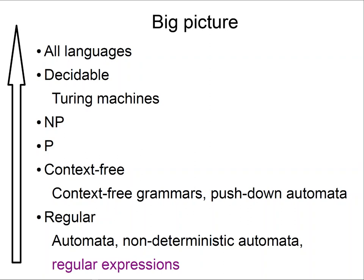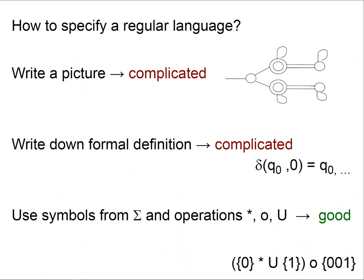Let's go back to our big picture. We've seen automata, we've seen non-deterministic automata, and now we're going to see regular expressions. How are we going to specify a regular language? We got a picture but it's kind of complicated. We can write down a formal definition but it's also complicated. Instead, what about we use the symbols from the alphabet and operations like star, concatenation, union, and so on? This turns out to be a good choice.